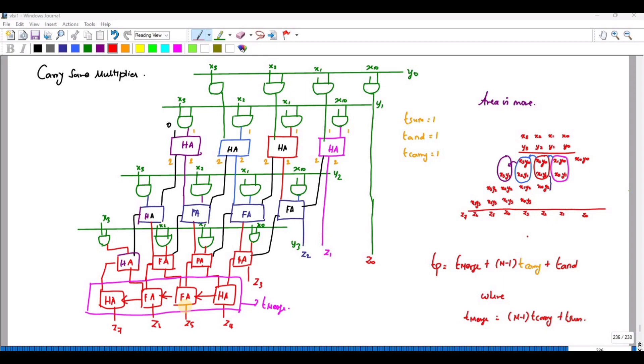The resulting multiplier is called carry-save multiplier because the carry bits are not immediately added but rather saved for the next adder stage.